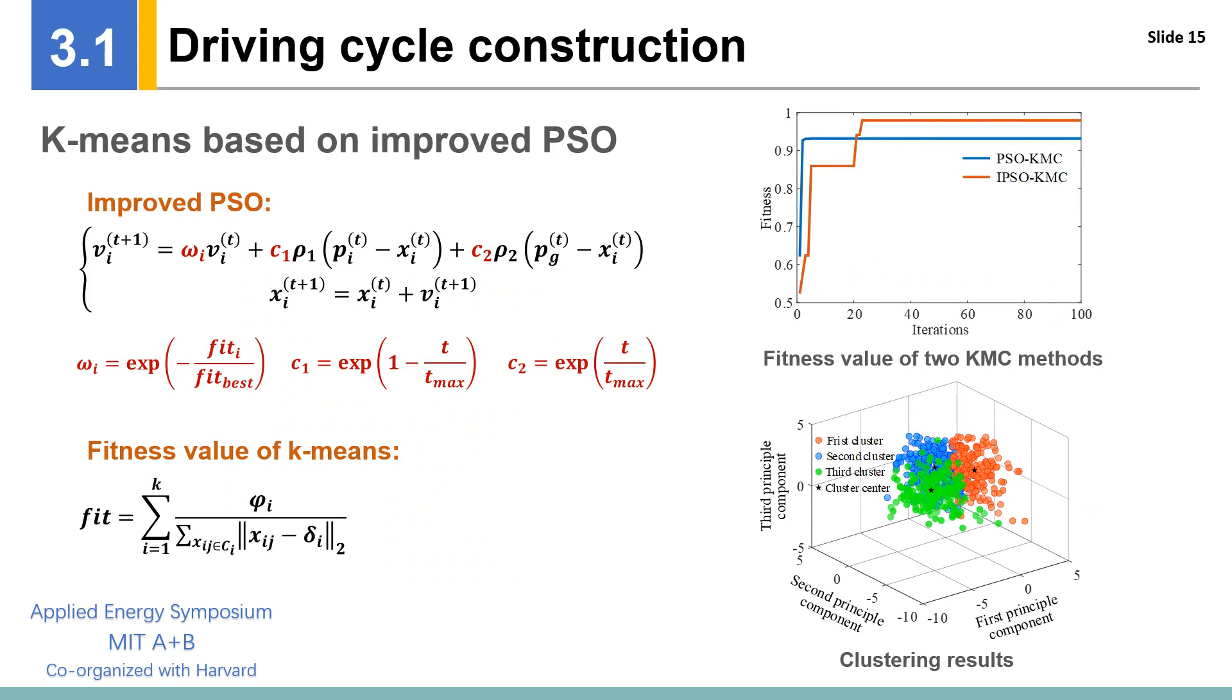The performance of K-means clustering is usually affected by the randomness of the initial cluster centers. Therefore, we use the improved PSO algorithm to select the initial cluster centers optimally. Compared with the traditional PSO method, in order to avoid falling into local optimum, our improved PSO method can adjust the inertial factor and learning factors adaptively. The fitness value of the two K-means clustering methods are shown here. The K-means clustering based on the improved PSO method can jump out of the local optimum after some iterations and finally achieve a higher fitness value.